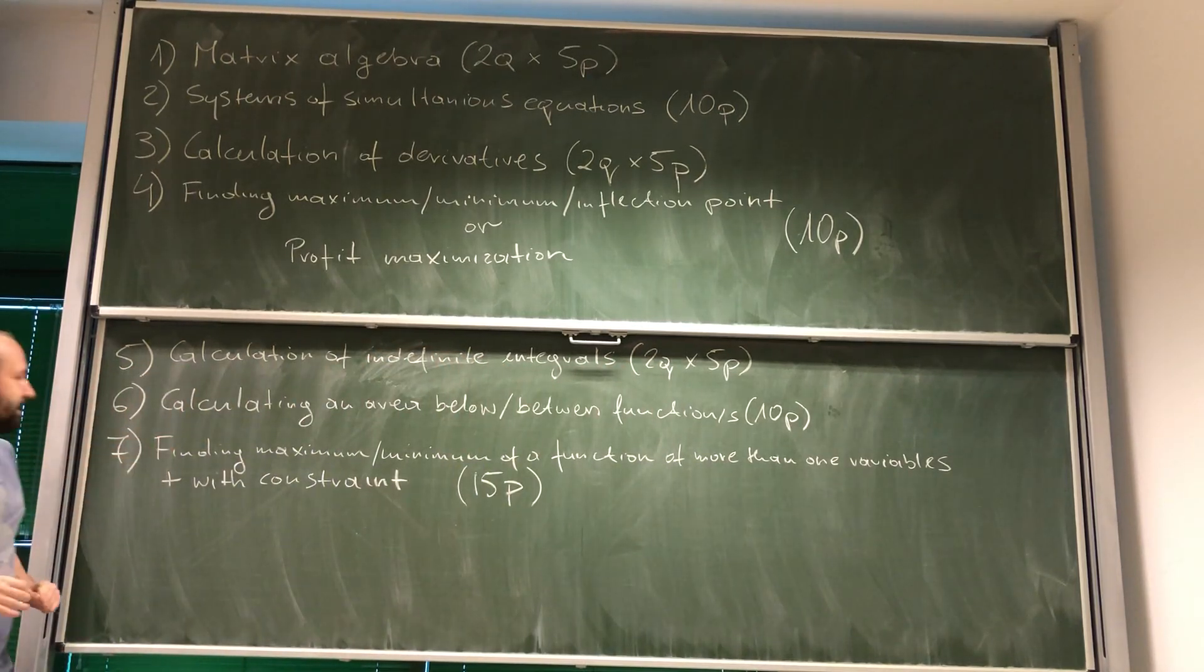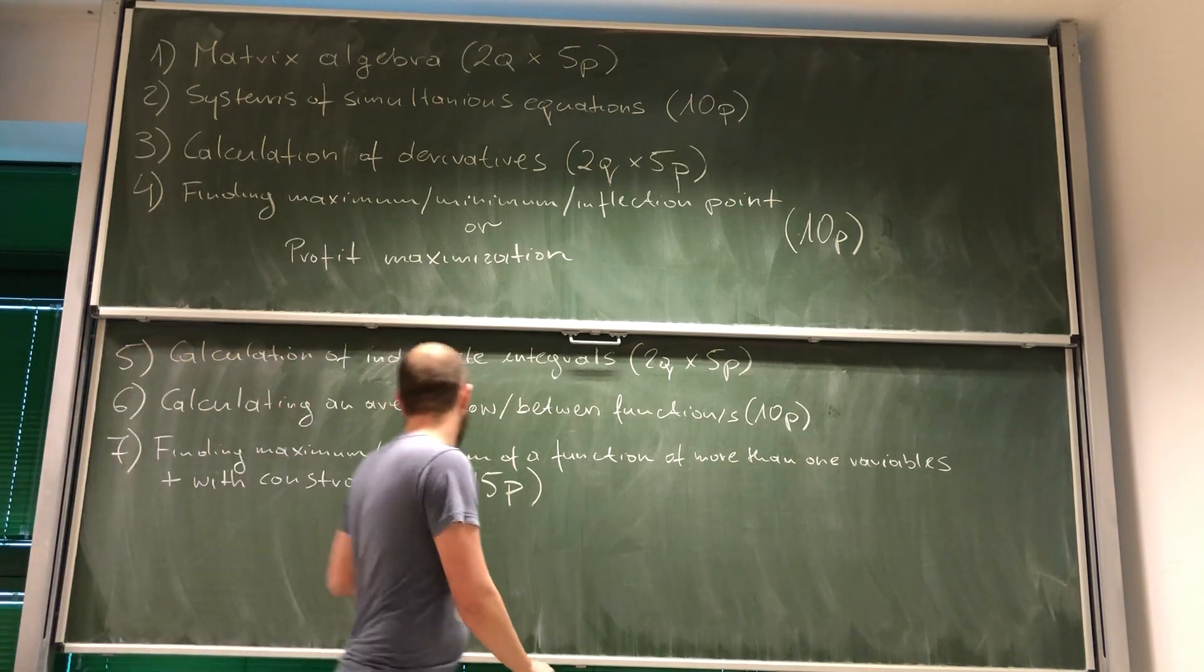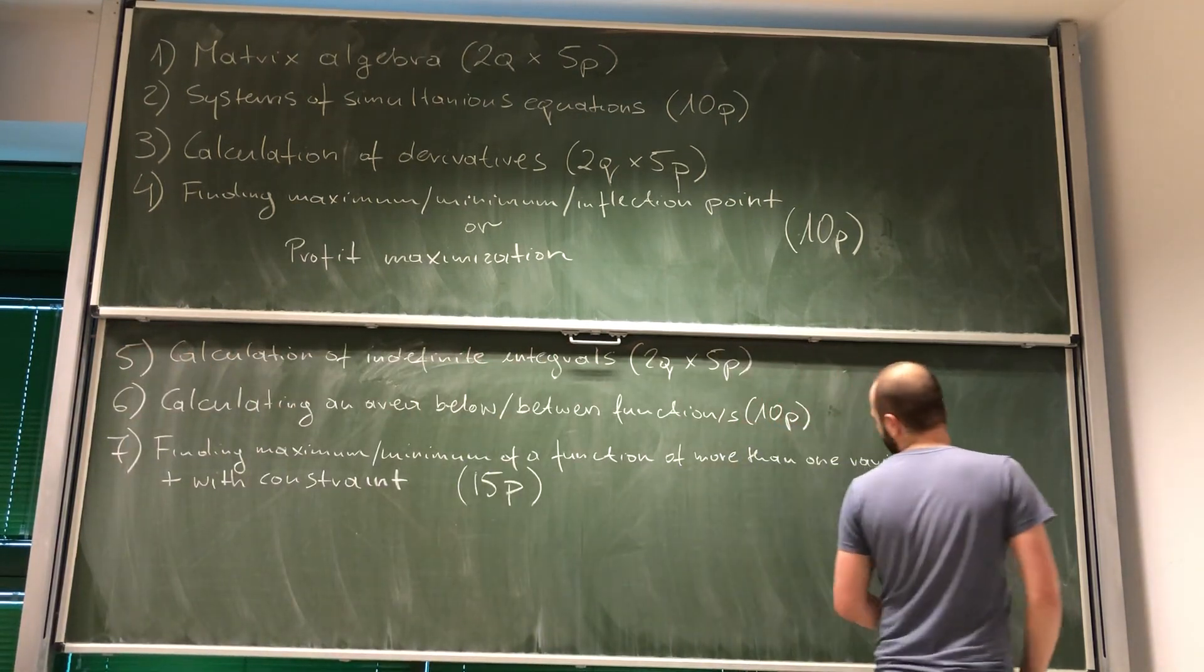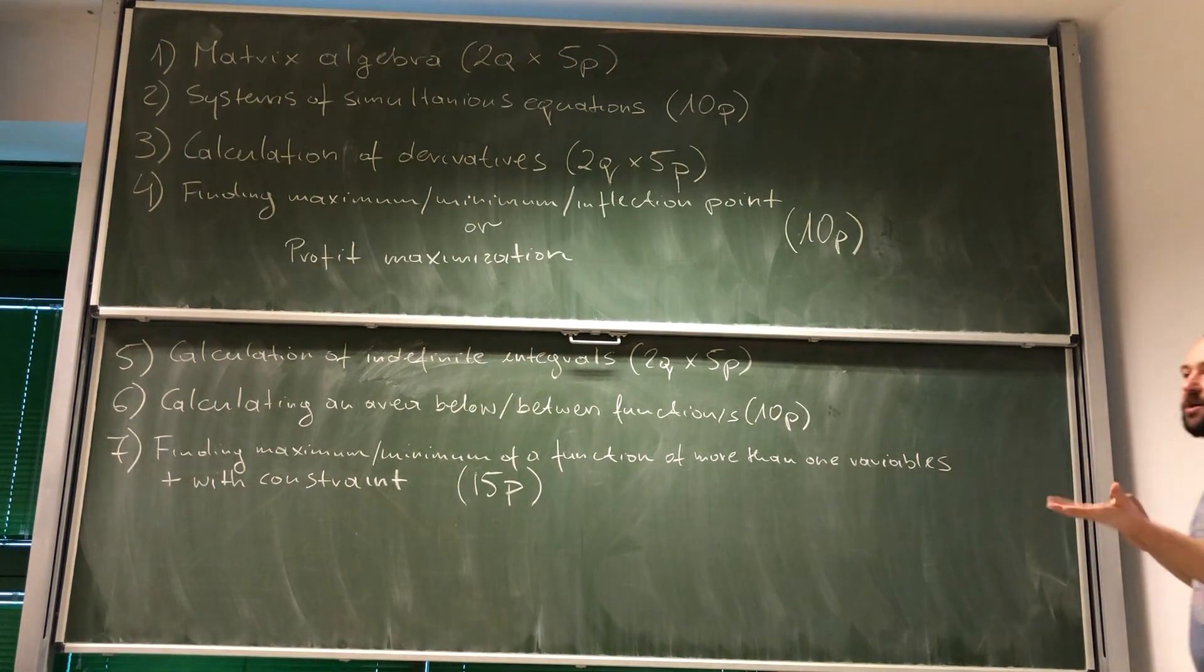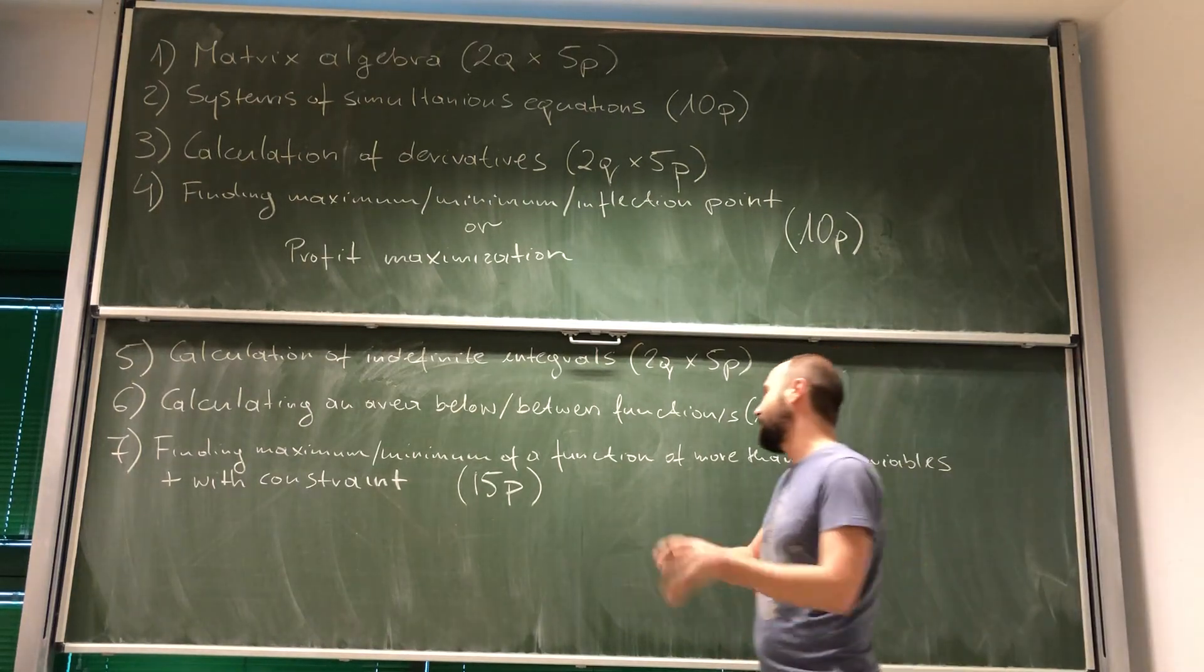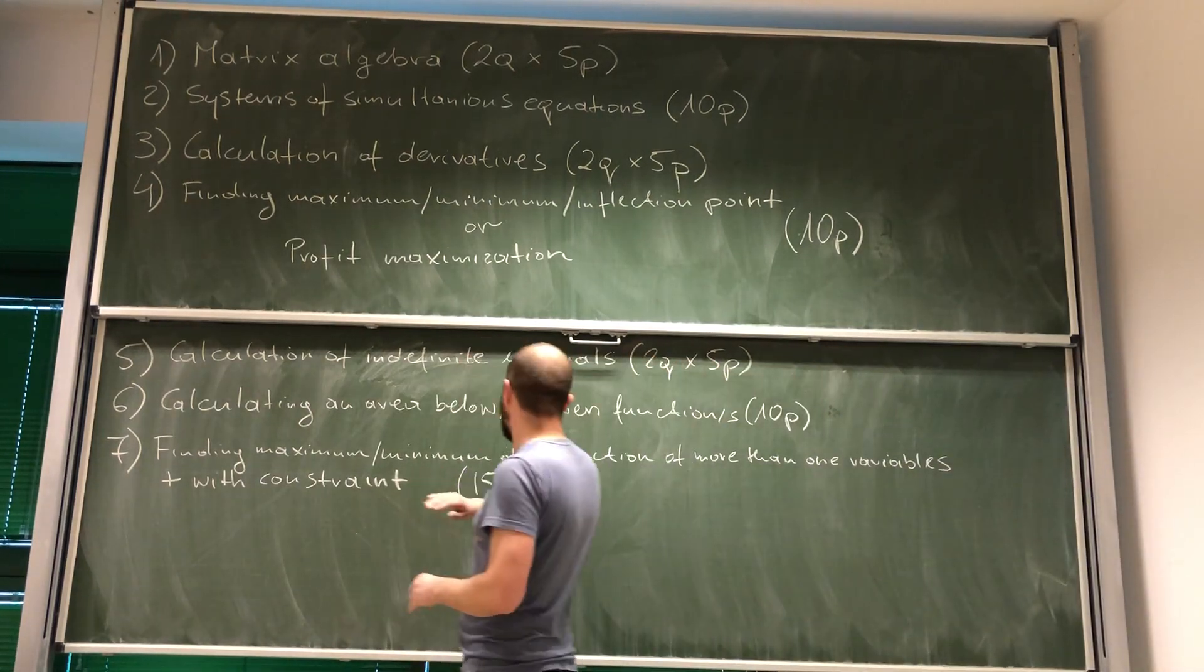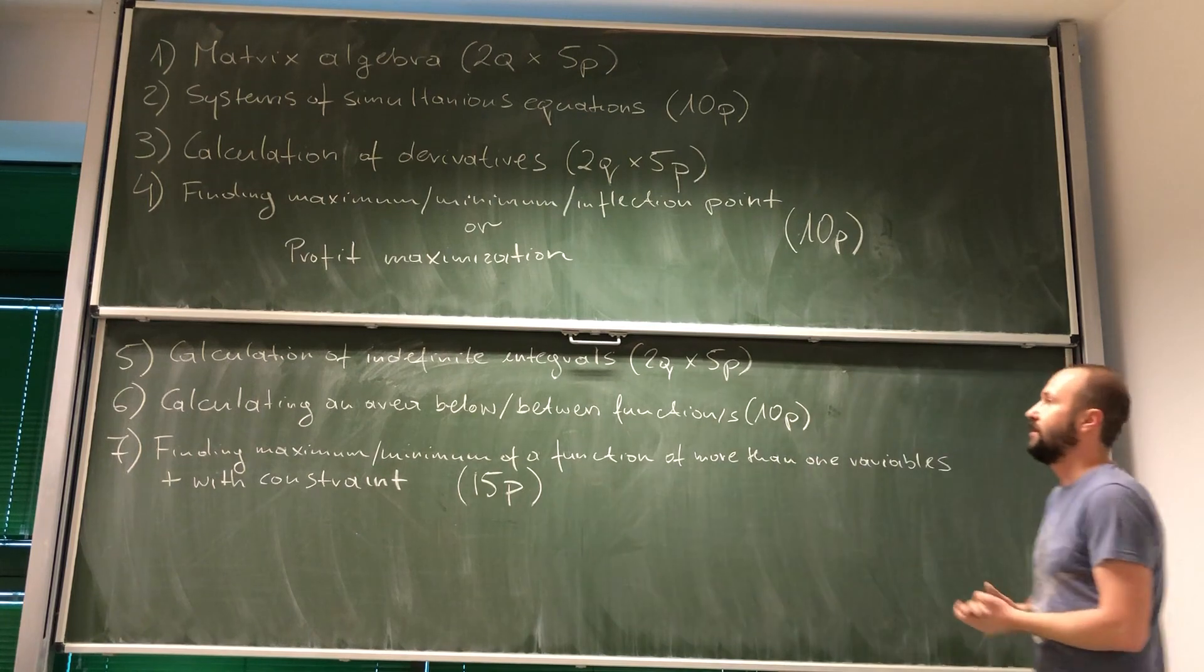Finally, section number seven is going to concern finding maximum or minimum of a function with more than one variable, plus with a constraint. Because we've done the cases with the constraint and without. This question is worth the most points - it's worth fifteen points.